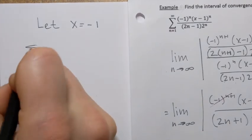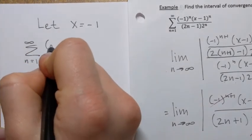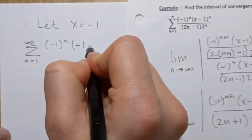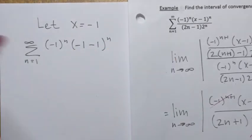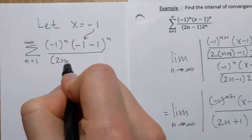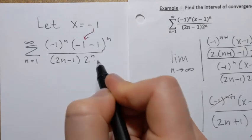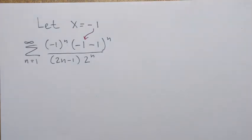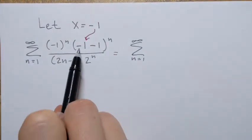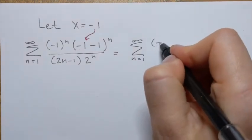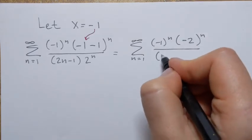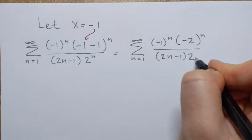Let's test the left endpoint: let x equal negative 1. Plugging into the original series, n goes from 1 to infinity, and we get negative 1 to the power n times negative 1 minus 1 to the power n, over 2n minus 1 times 2 to the power n. Simplifying, that's negative 1 to the power n times negative 2 to the power n, over 2n minus 1 times 2 to the power n.